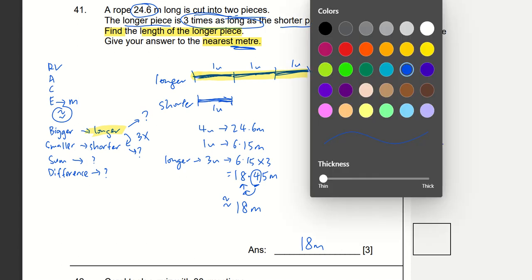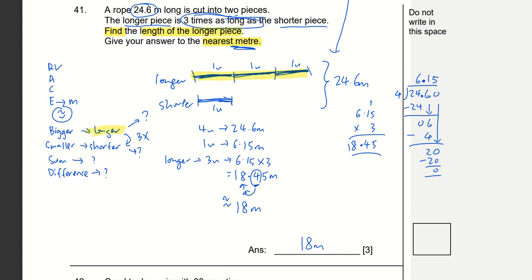Now, alternatively, I can also use another method. Now that I already found out one unit is 6.15, and four units is the total, and the longer is three units. Actually, all I need to do is take the total four units, that's 24.6 meters, minus 6.15 meters. That is the other method to get to the answer of 18.45 meters, and then round to 18 meters. I can always use another method to check if you have enough time after completing the whole test.